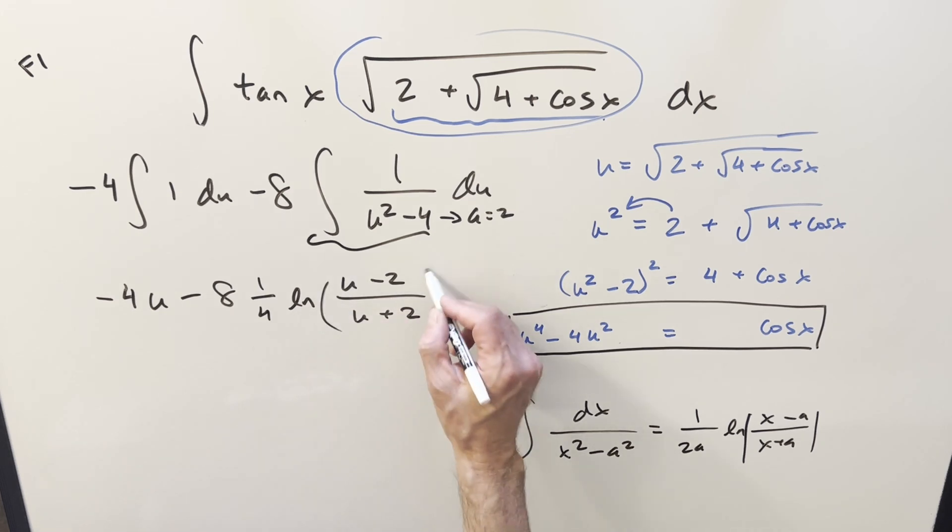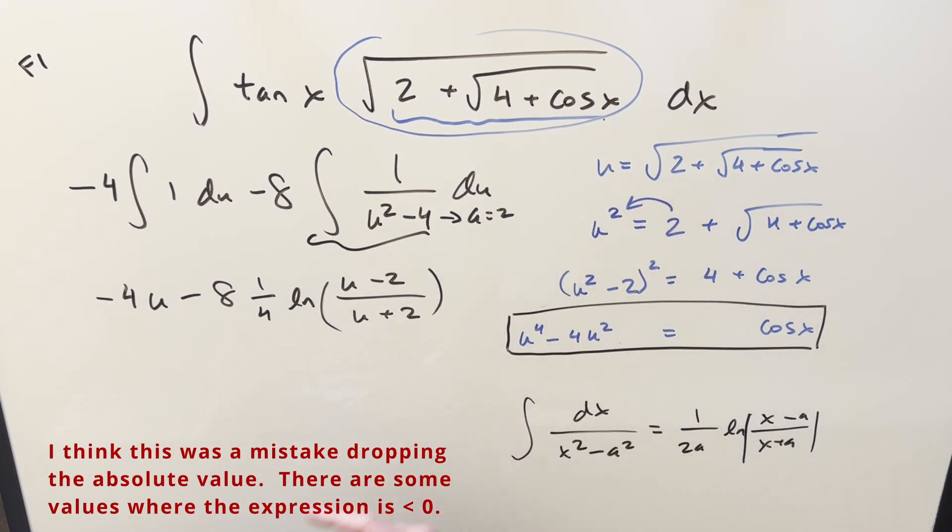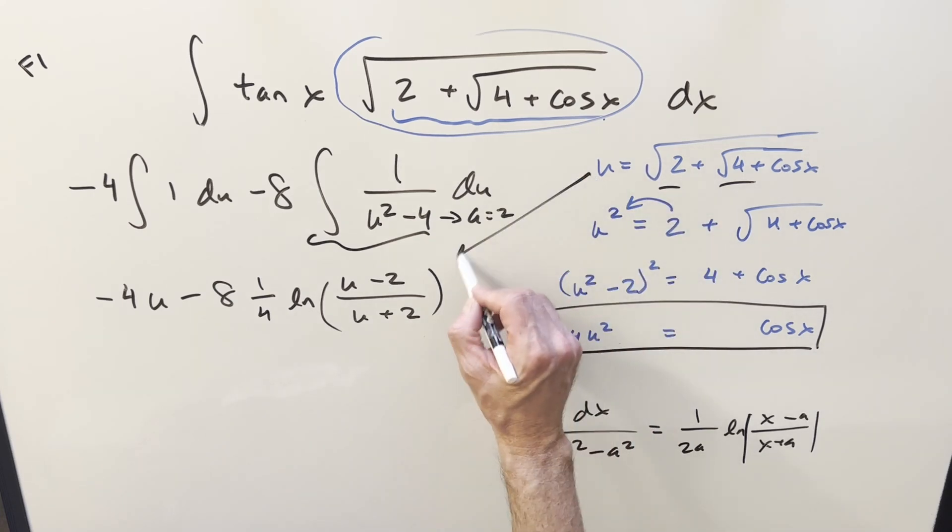Then we're going to have natural log u minus 2 over u plus 2. I dropped the absolute value just knowing because u, this is always going to be positive. And then even with the minus 2, it's not going to matter because this is going to be greater than 2, what's coming out of the square root. So all we need to finish it off is just a back substitute with our u value.